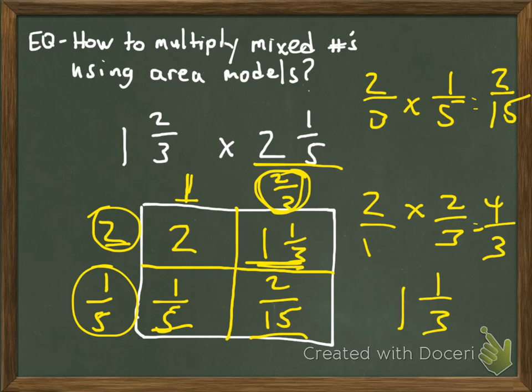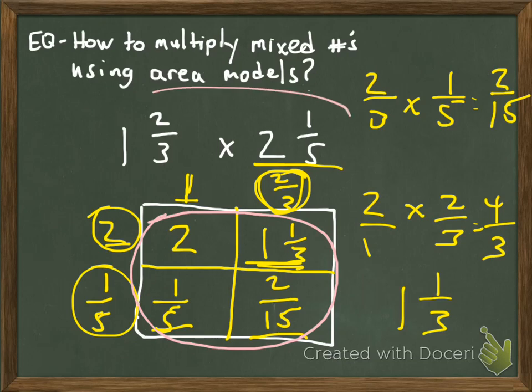Now that I have all the different parts of the area model filled in, I need to take all of these numbers within the area model and add them together to figure out what the product of 1⅔ times 2⅕ is. Let's take a look at the second part — adding these numbers together.